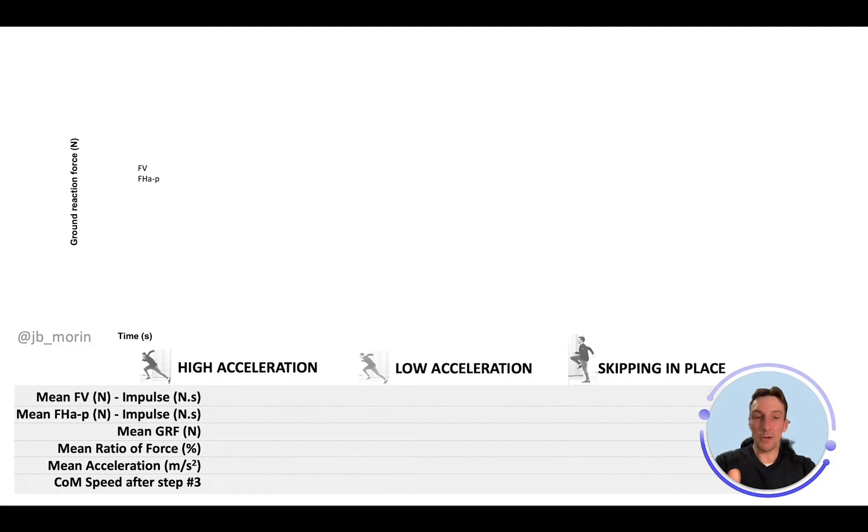It's force plate data, the gold standard and reference measurement in biomechanics, across three exercises: a very high acceleration exercise, which is my maximum sprint start; a low acceleration exercise, a jog start with much less performance; and skipping in place where you're not moving forward.